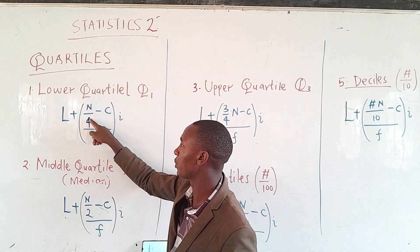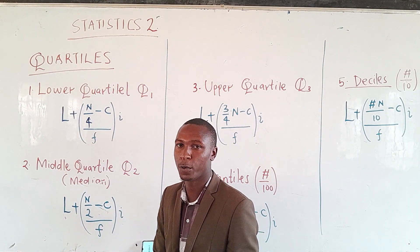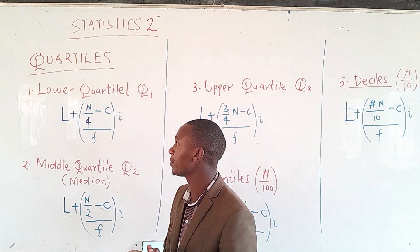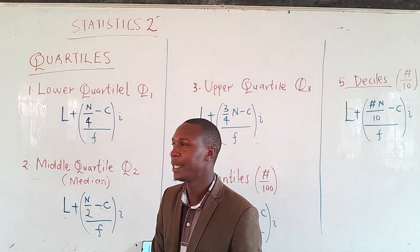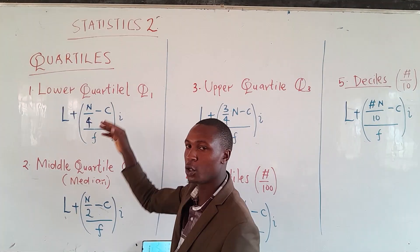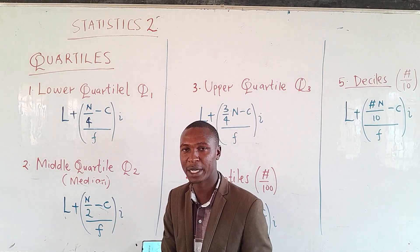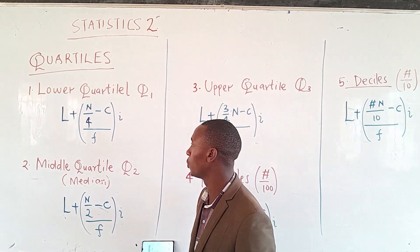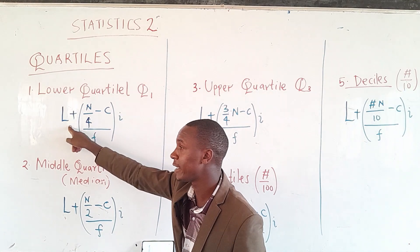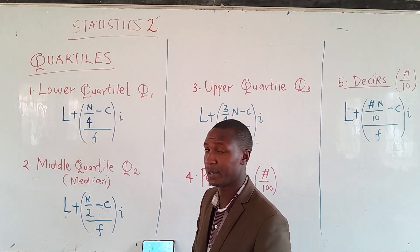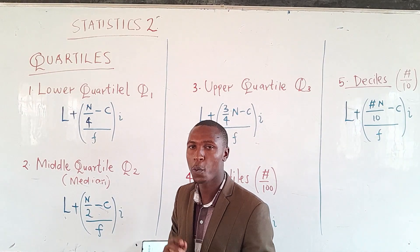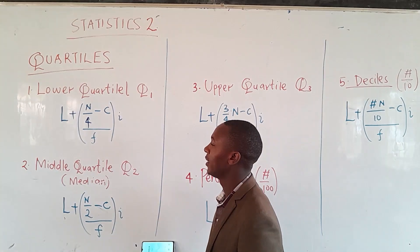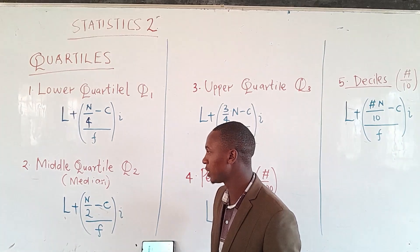What changes is which class you are going to use to obtain Q1, and that is determined by n over 4. Remember, in the median formula this part was n over 2, and now we have it as n over 4, meaning you obtain the first quarter of your given data. How you obtain c and the class to use will be explained in our next video.